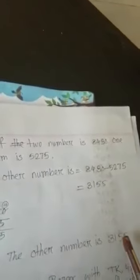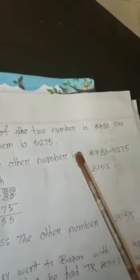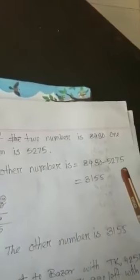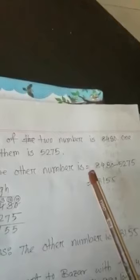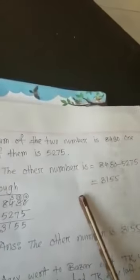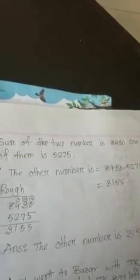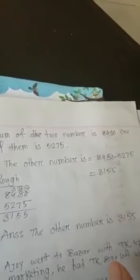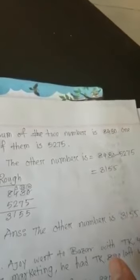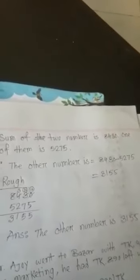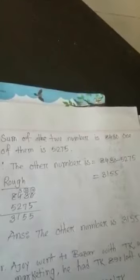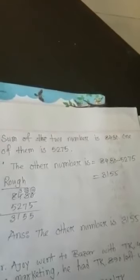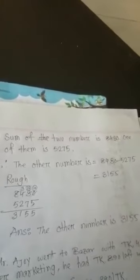The answer is 3155. Some students are writing the smaller number first and the greater number second — that is wrong, so be careful. I hope next time you will be more careful. Do this math at home and write it in your notebook two times, then send it to my WhatsApp number so I can check. I'm also informing you that we are recording who is sending their work, and students who don't send will have their marks cut in the final and half-yearly exam. Thank you very much, my dear student. Be careful, be safe at home.